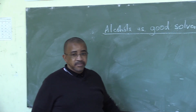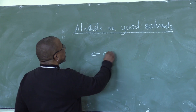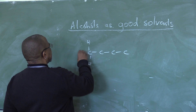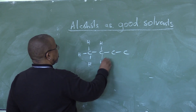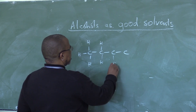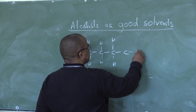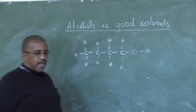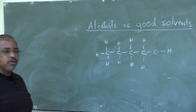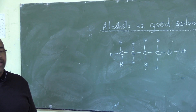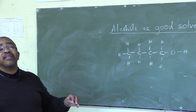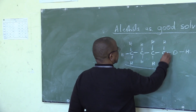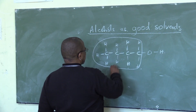Now, alcohols — ama-alcohols. Let's take butan-1-ol as an example. Ama-alcohols — why are they good solvents? Alcohols have a CH part which is non-polar.